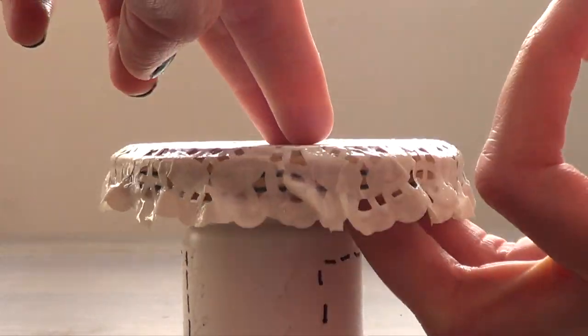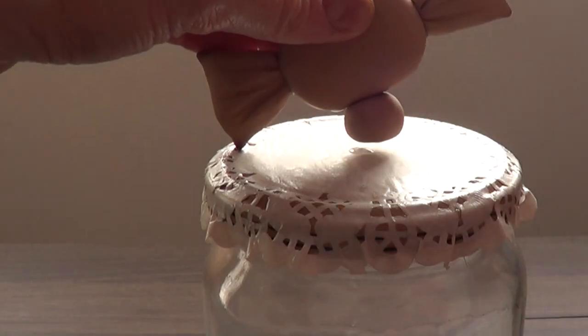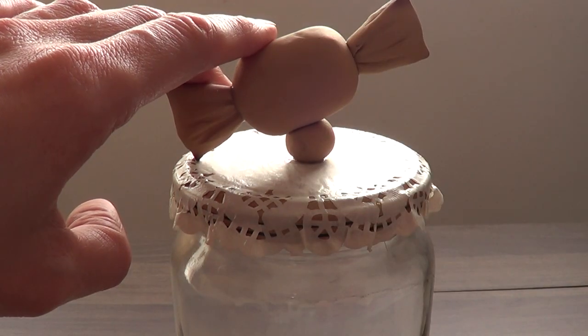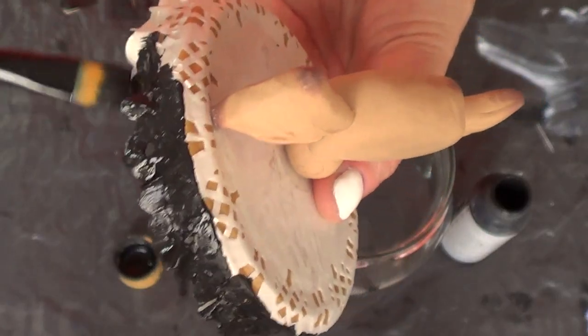So once my doily has hardened, I'm just going to be gluing my bow part, which is baked at this point, and I'm just going to glue it on top of my lid. Once it's done, you can pretty much go ahead and do whatever as far as painting goes.